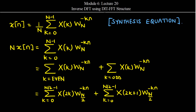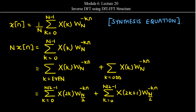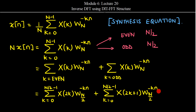Let us try to analyze that. If we recall the derivation for the decimation in frequency fast Fourier transform, we had started with X of n, the synthesis equation, and then split it into two parts — the even and odd parts. We then replaced K by 2K, varying the new K from 0 to N/2 minus 1, assuming N/2 even values and N/2 odd values. The odd part was represented as X of 2K+1 with twiddle factor W_N to the power minus n. This was the basic derivation for the DIF FFT.